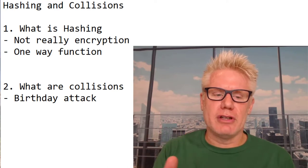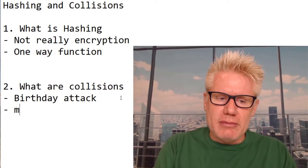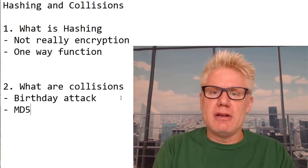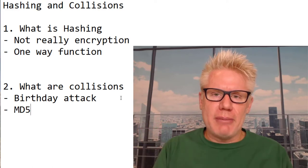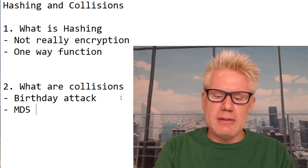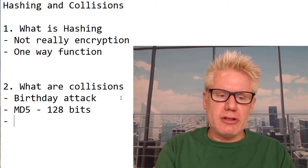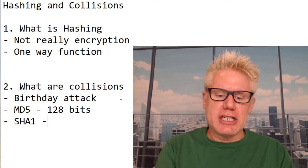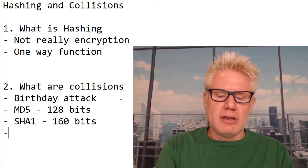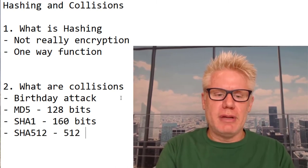So I'll give an example of collision. There are MD5 is a common hash algorithm that's been broken, as they like to say, and there are examples of collisions with MD5. So MD5 uses 128 bits. SHA-1 is another type of hash algorithm that uses 160 bits. And there's quite a few other ones. SHA-512 uses 512 bits.